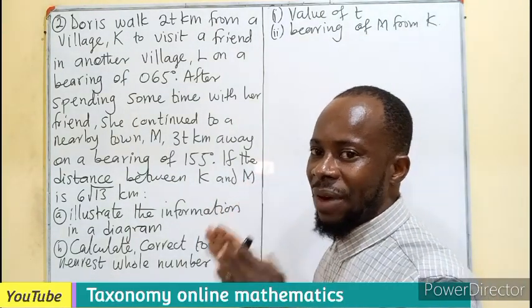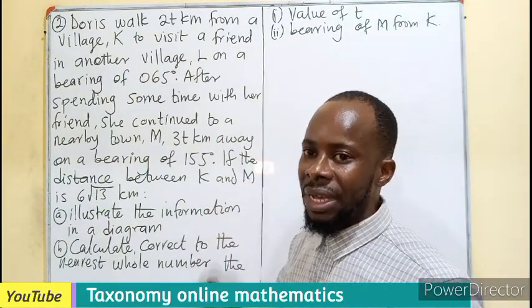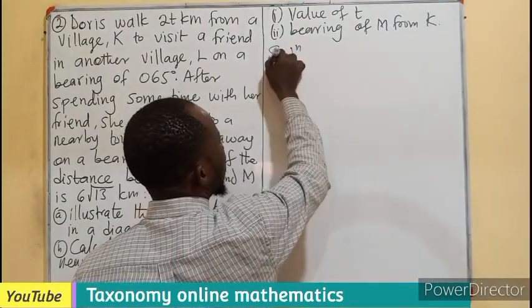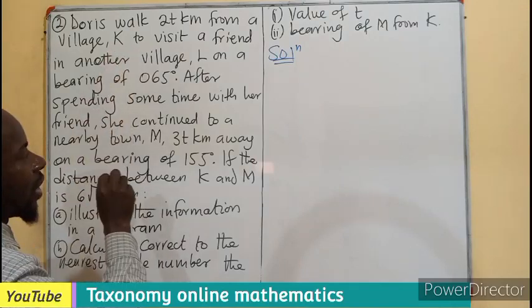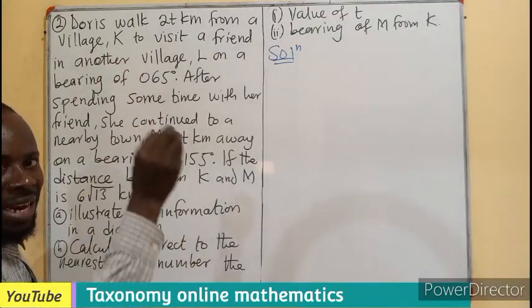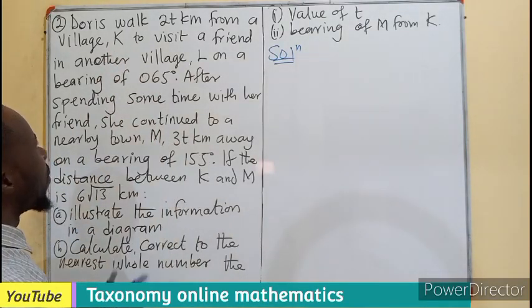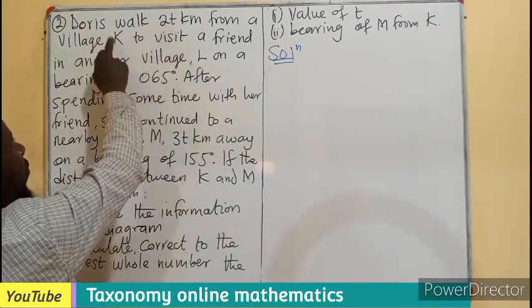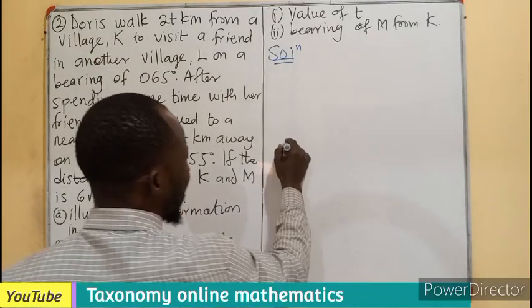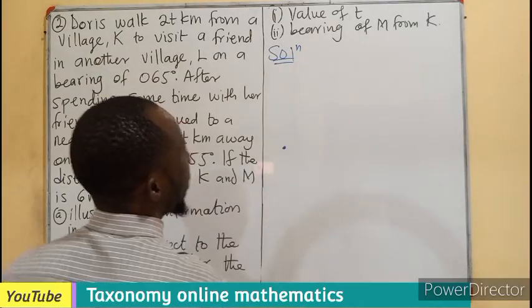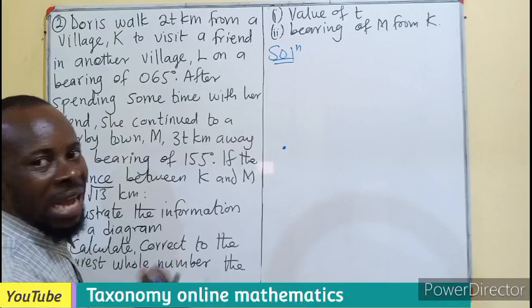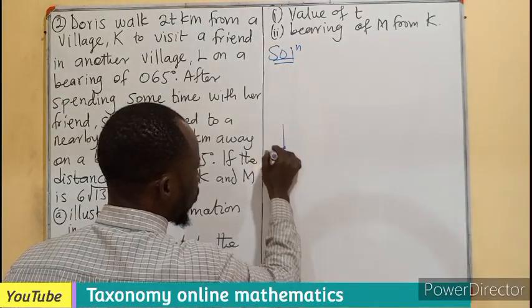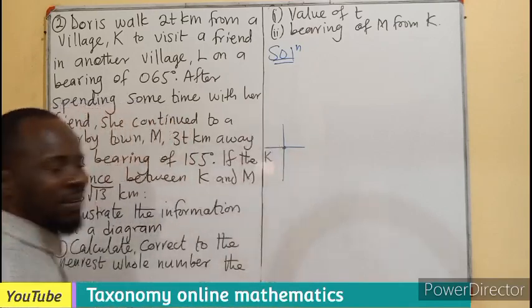You know, this is a bearing question that we need to make a sketch for the diagram. So now let's go back to the question and read with understanding, picking out the point you're looking for. We are looking for the first town. It says Doris walked these kilometers from a village. So let's indicate the village K somewhere here and to be a safer site, let's use our Cartesian plane to indicate where the town K is.